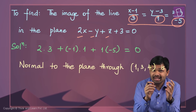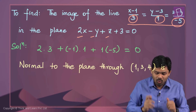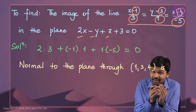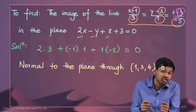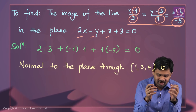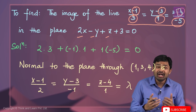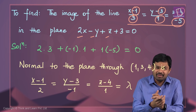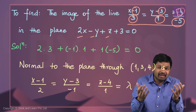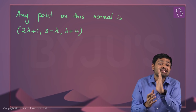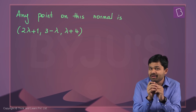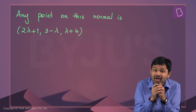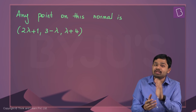The normal through the plane passing through the point (1, 3, 4) — which lies on the given line — has to be computed. This normal will also pass through the image line. The normal to the plane through (1, 3, 4) is: x minus 1 by 2 equals y minus 3 by minus 1 equals z minus 4 by 1, where 2, minus 1, and 1 are the direction ratios of the normal. Setting this equal to parameter lambda, any point on this normal is (2λ + 1, 3 − λ, λ + 4).